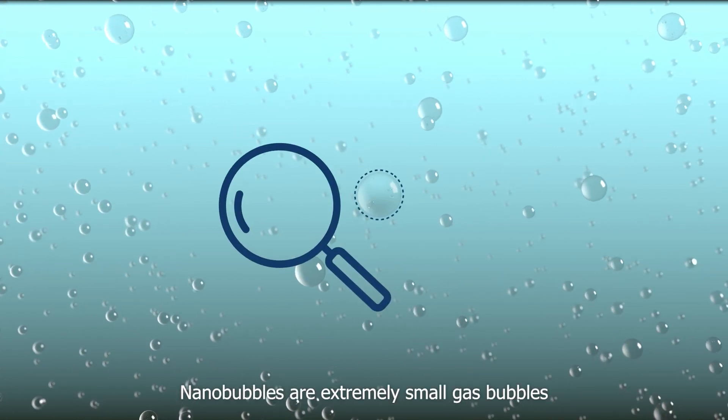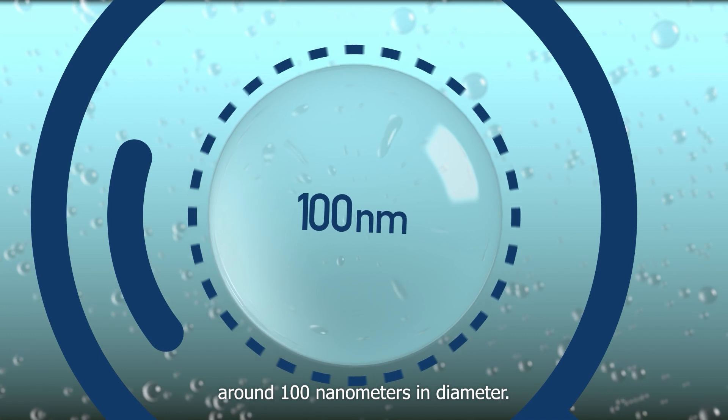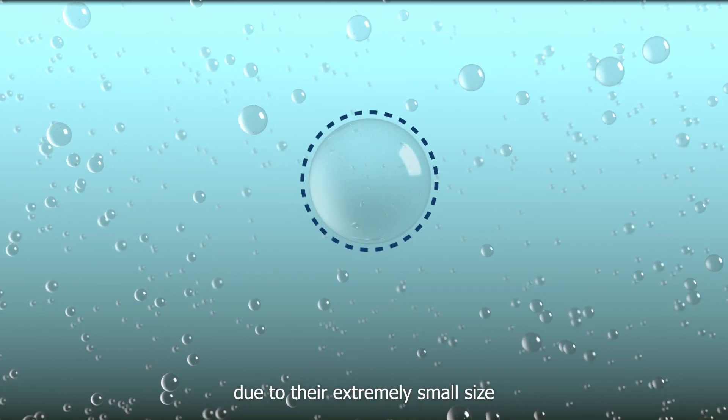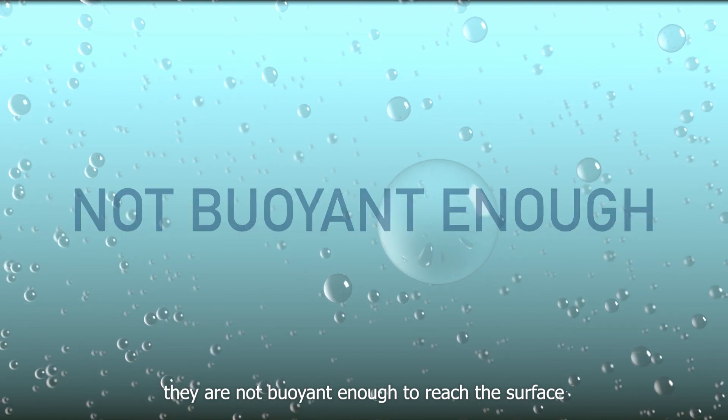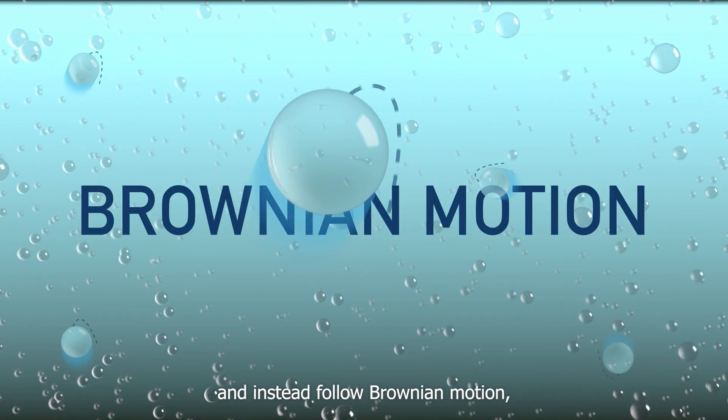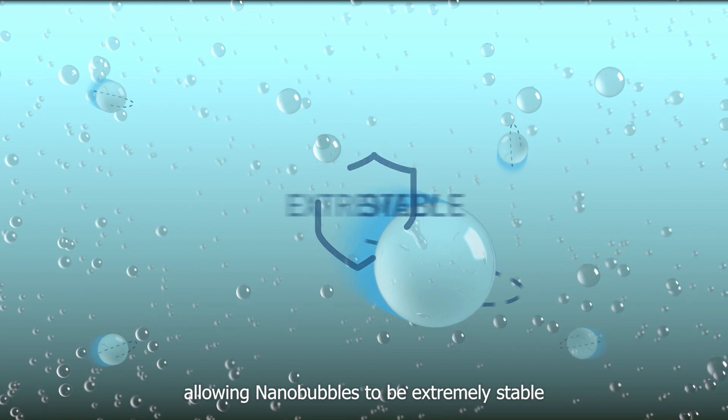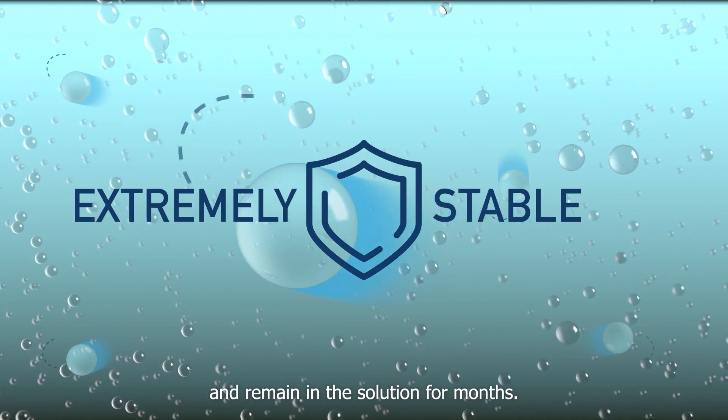Nanobubbles are extremely small gas bubbles, around 100 nanometers in diameter. Due to their extremely small size, they are not buoyant enough to reach the surface and instead follow Brownian motion, allowing nanobubbles to be extremely stable and remain in the solution for months.